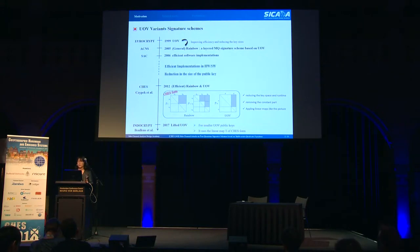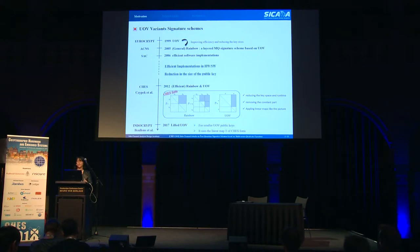In 2017, a paper proposed a lifted UOV for smaller UOV public keys. It uses the T chess form.